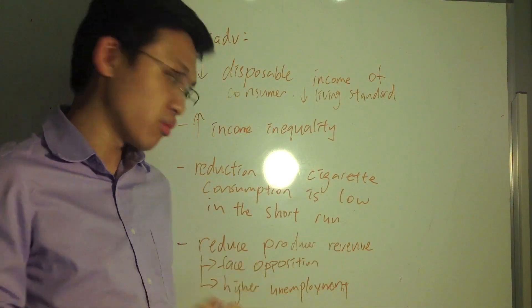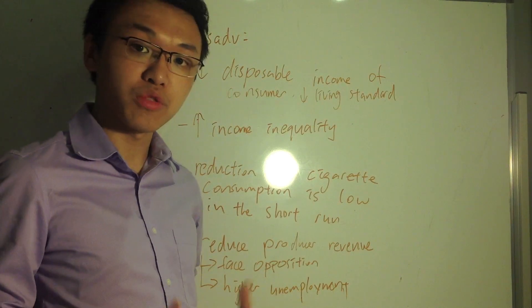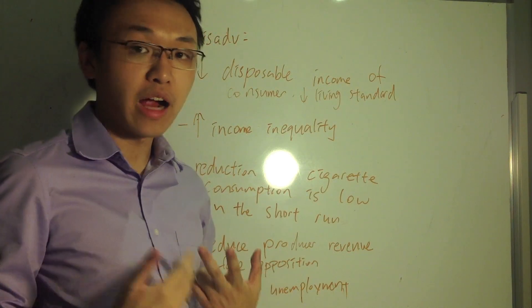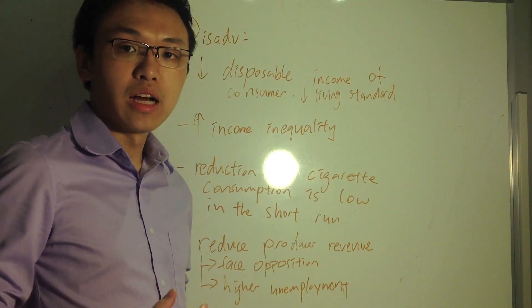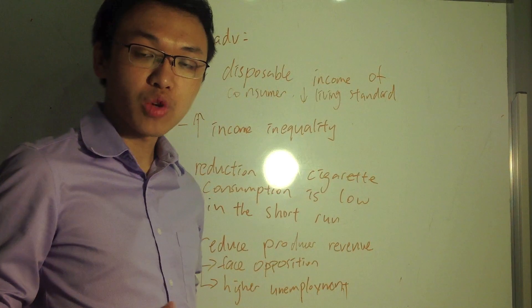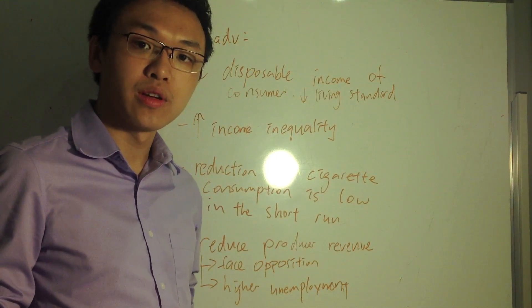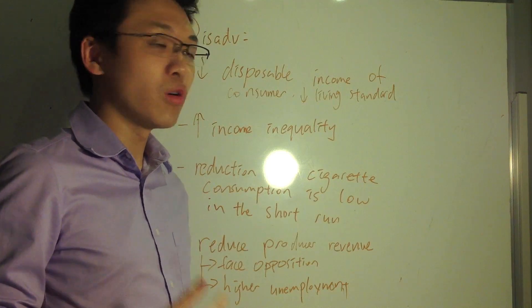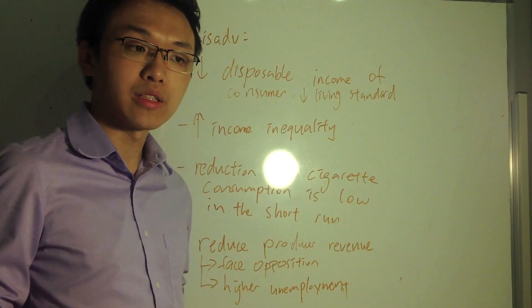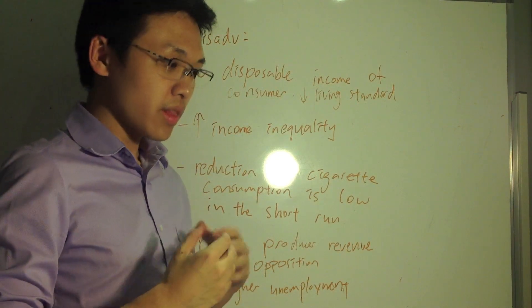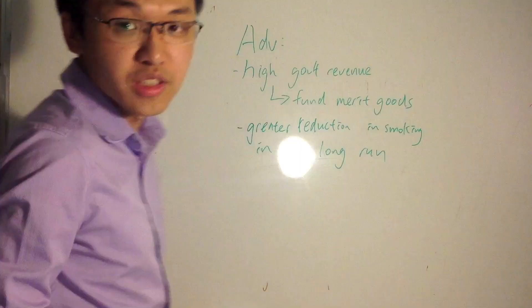And lastly, it reduces producer revenue. So what is the implication? You can face opposition from the producers, first of all. And secondly, it can lead to higher unemployment. You can also mention in your essay that cigarette workers at cigarette companies are likely to be manufacturing workers who have low skills. So basically, it can lead to structural unemployment because they may not have skill sets to find other jobs.